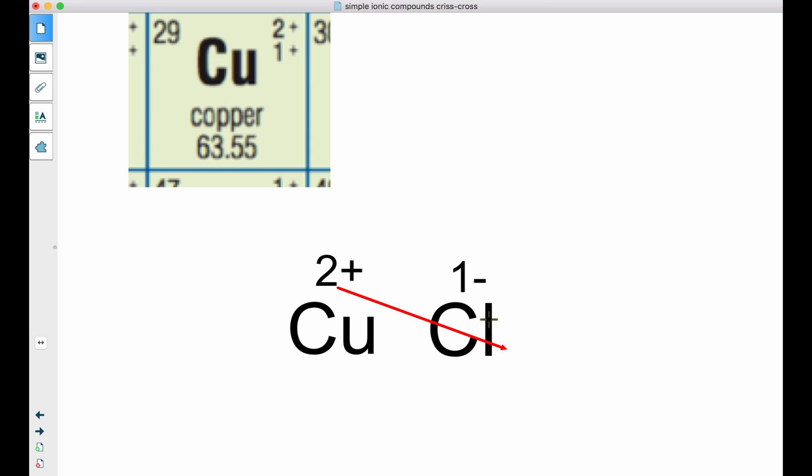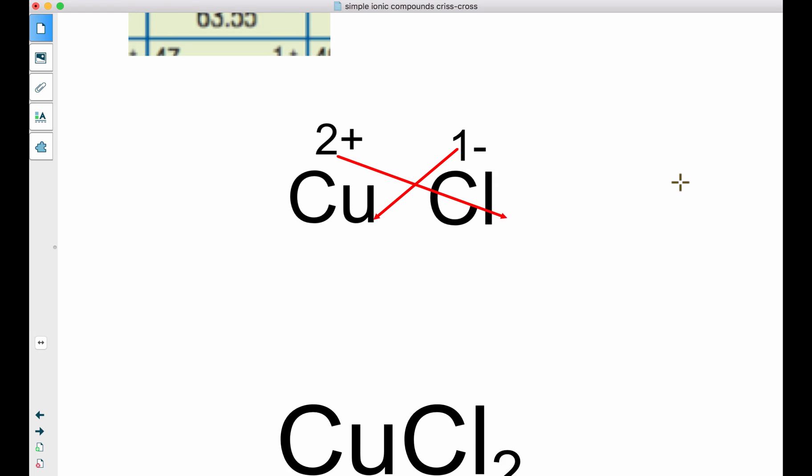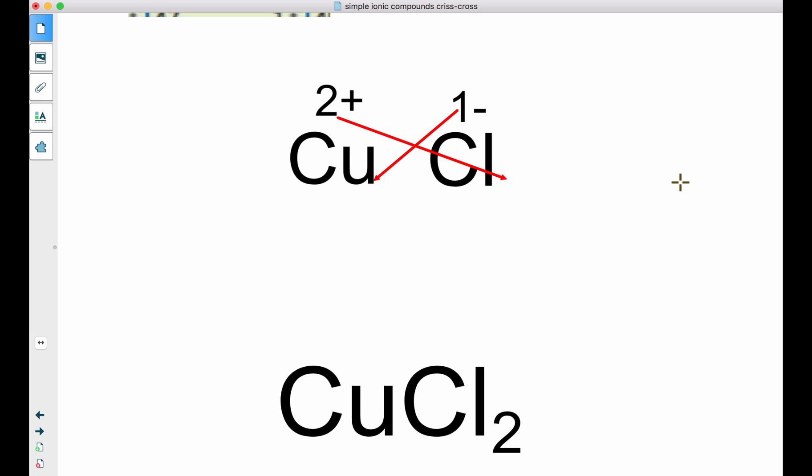So I will need 2 chlorines for every 1 copper. We write it out: CuCl₂.